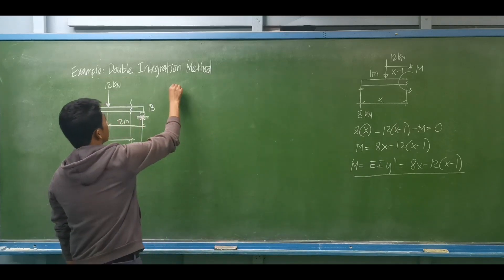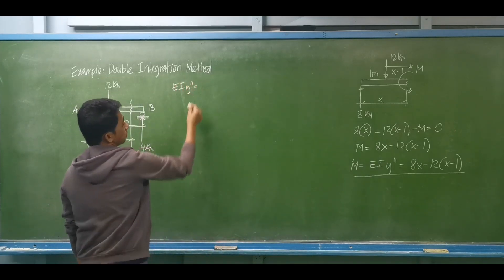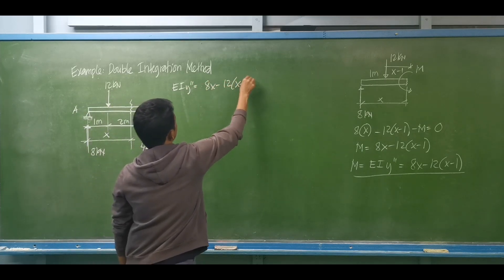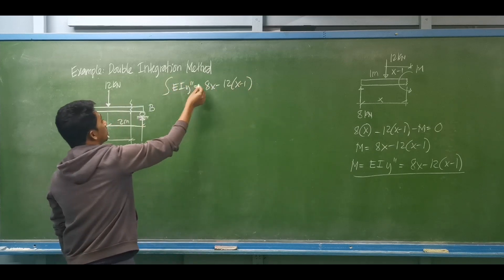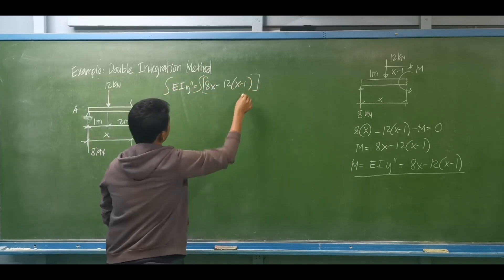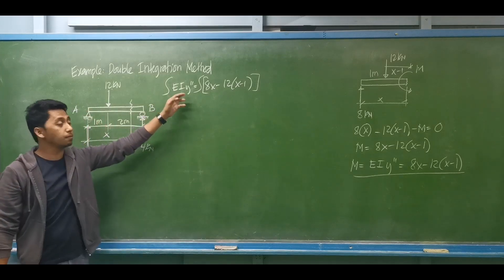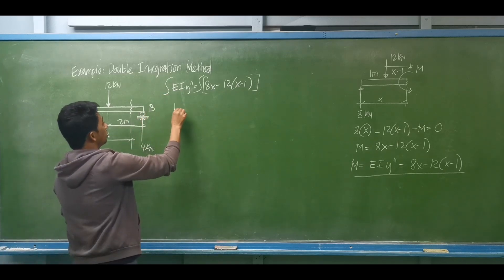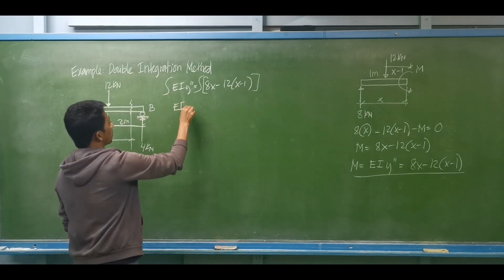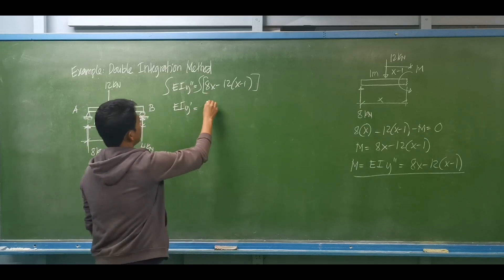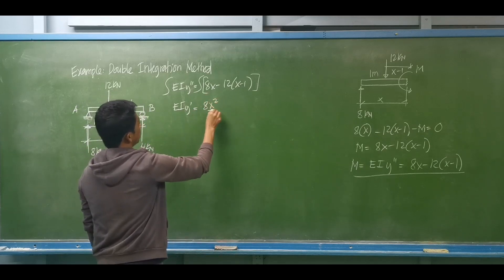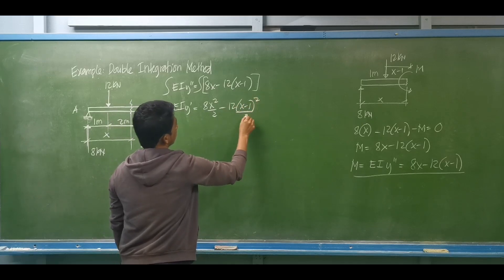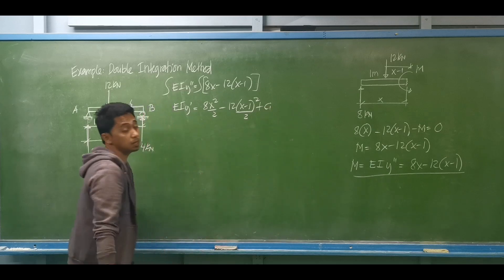So we have EI y double prime equal to 8x minus 12(x minus 1). Integrating both sides: EI y prime equals the integral of 8x — which is 8x squared over 2 — minus 12 times (x minus 1) squared divided by 2, plus the first arbitrary constant C1.